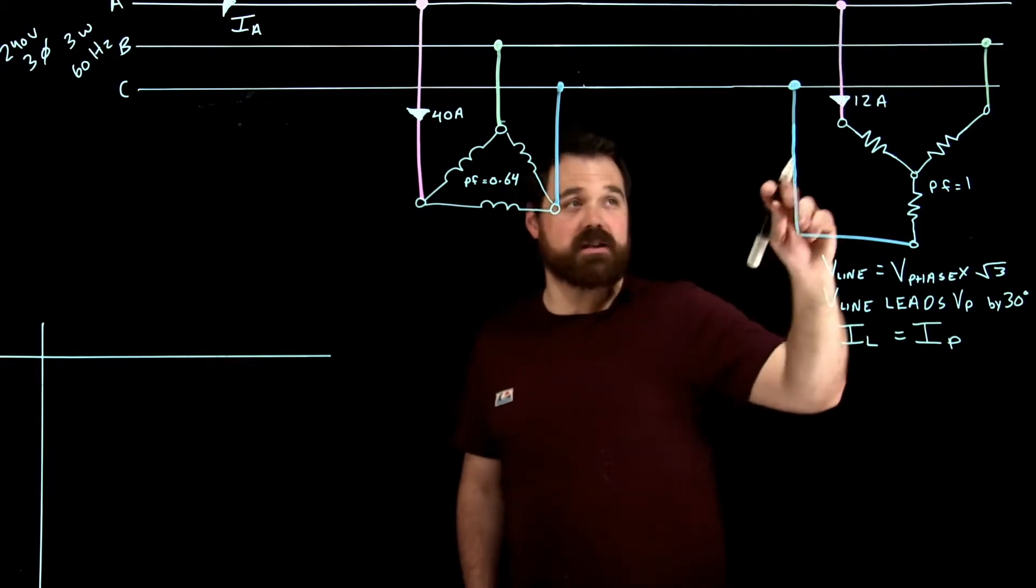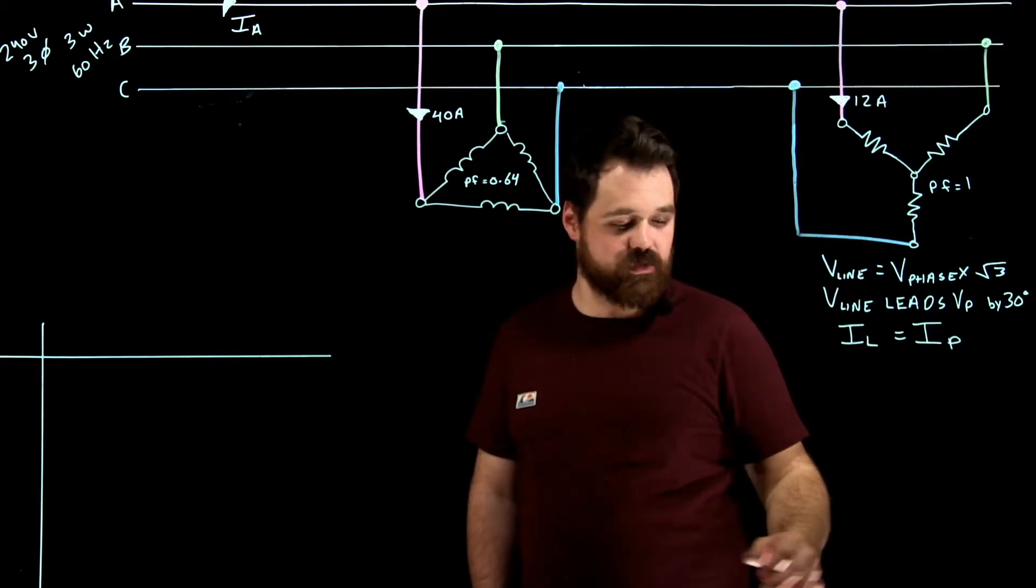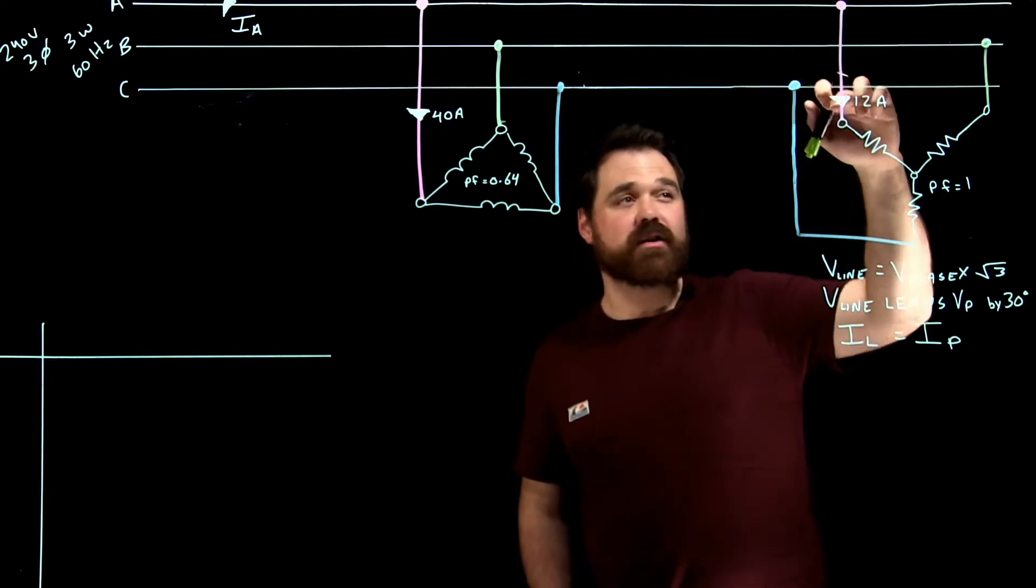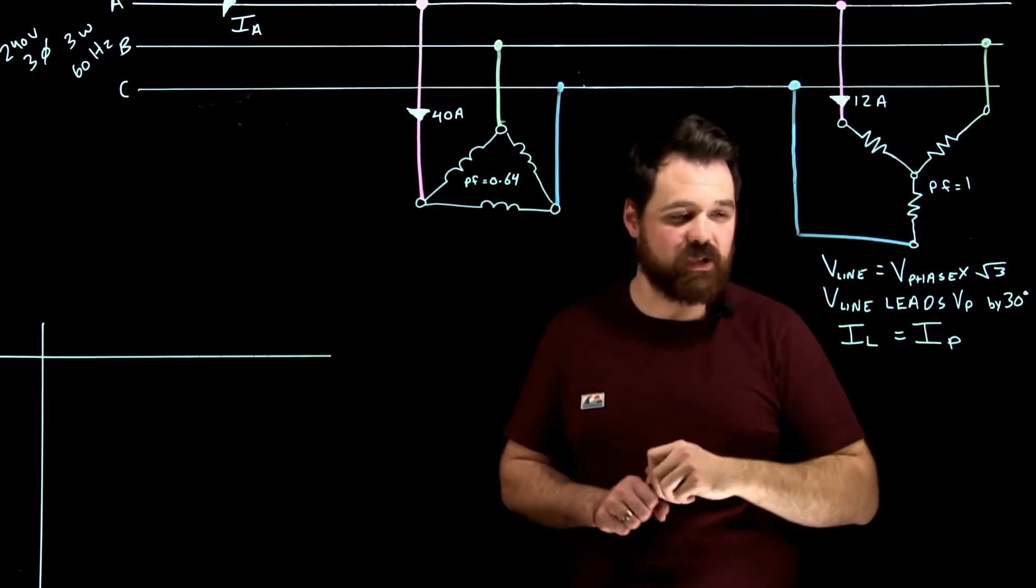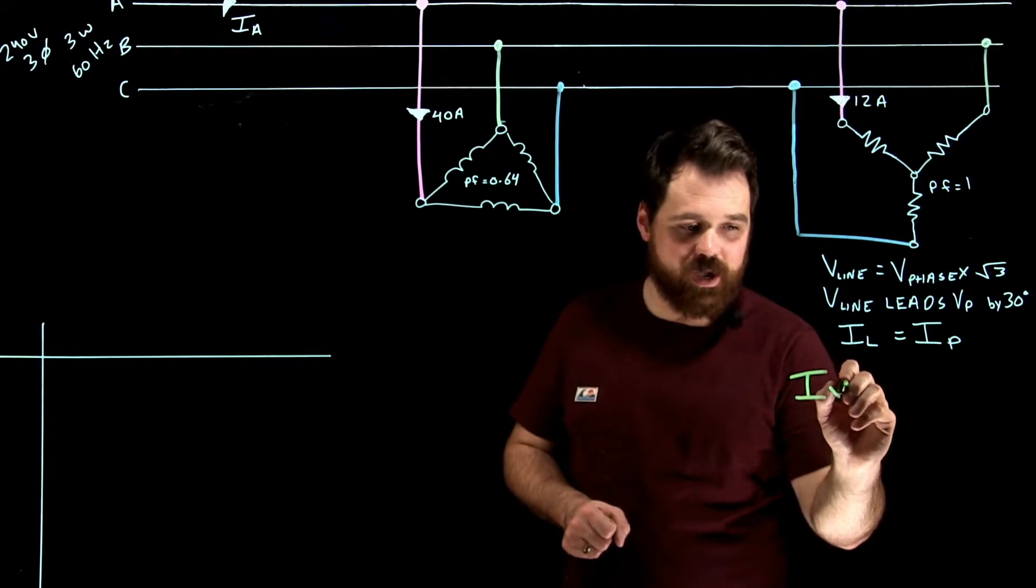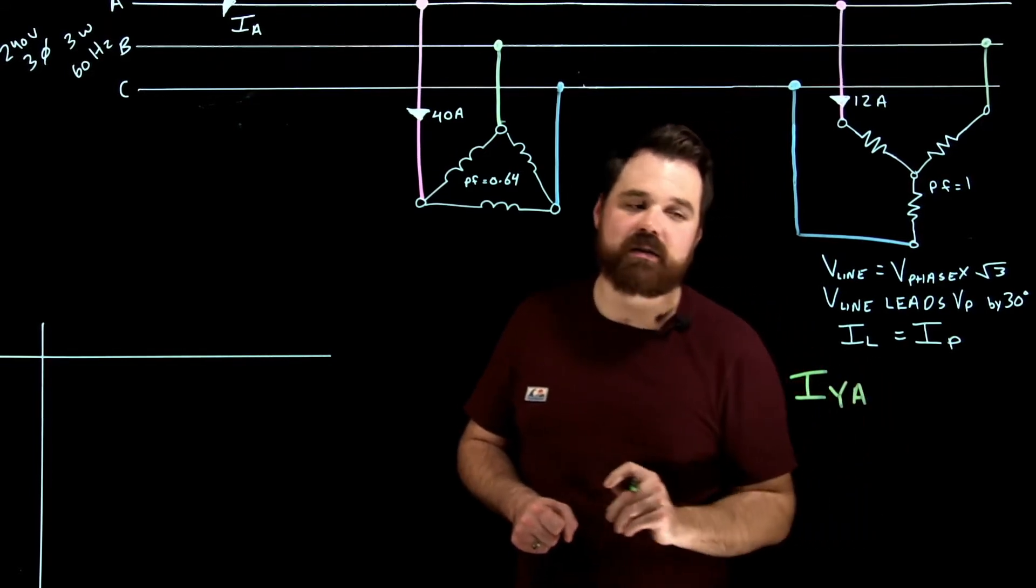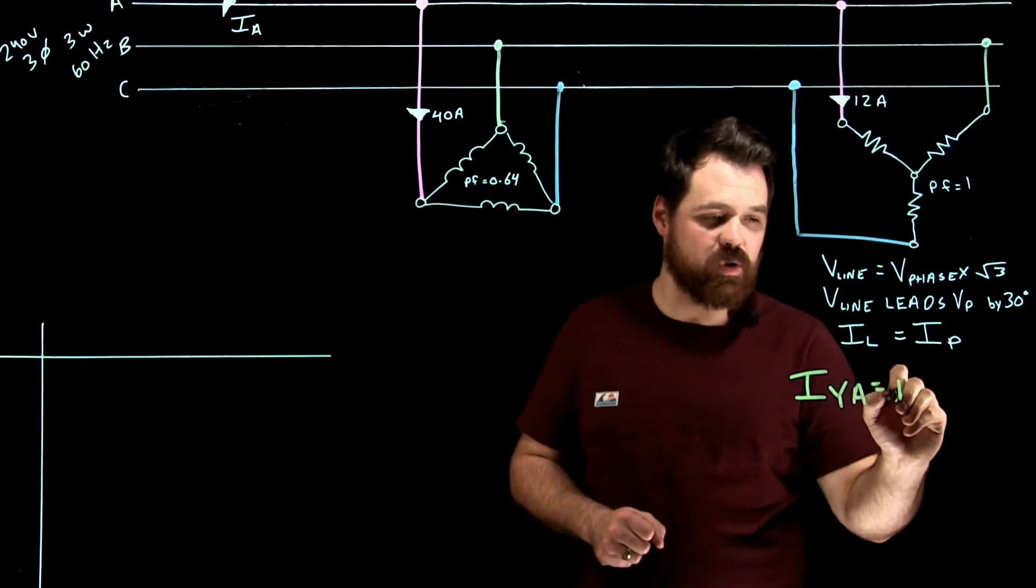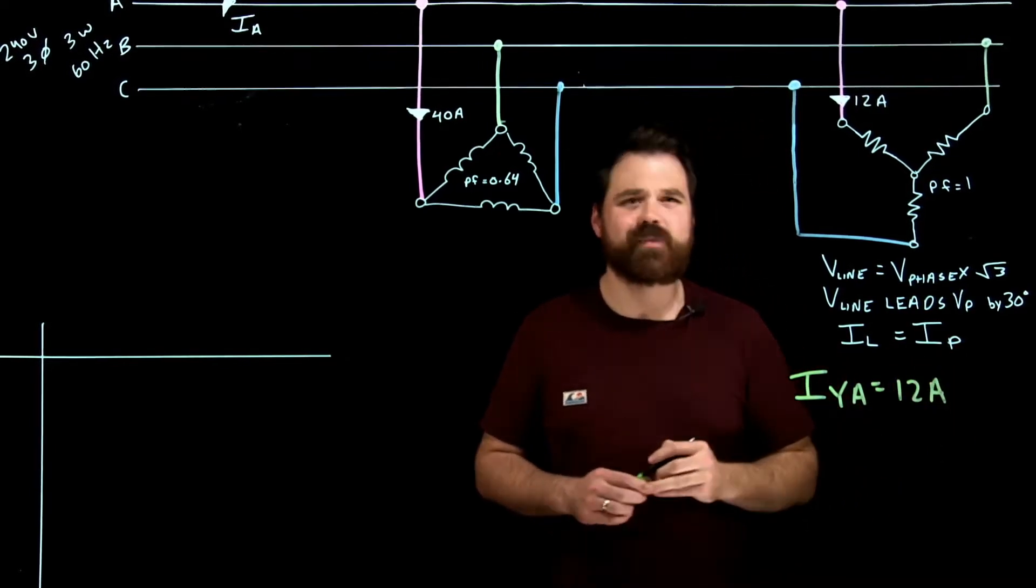So in this case, I'm given 12 amps. I'll use this green for here. I got 12 amps, which tells me that my line current I Y line A, the Y load line A, equals 12 amps. Awesome.